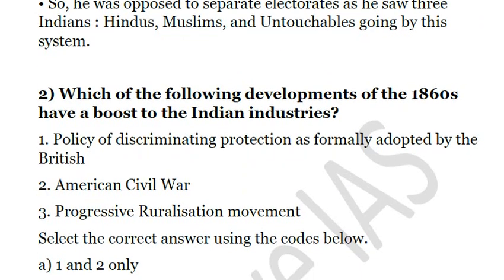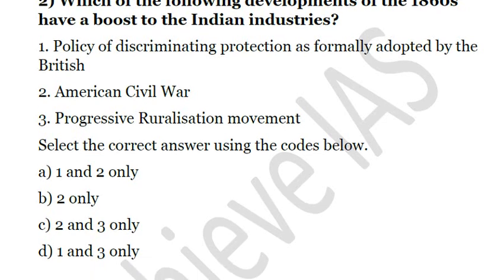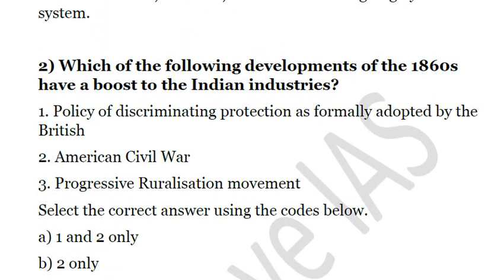Question 2: Which of the following developments of the 1860s gave a boost to Indian industries? First, policy of discriminating protection as formally adopted by the British. Second, the American Civil War. Third, progressive ruralization movement. The answer is Second only — the American Civil War. At that time, raw cotton which was earlier exported by America was no longer exported to Britain, so Britain turned towards India for raw cotton. Options 1 and 3 have no relation to the industrialization boost. The answer is B.